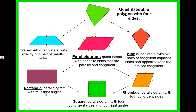A rectangle is a parallelogram with four right angles. This special parallelogram, the rectangle, has four right angles, and opposite sides are still parallel and congruent.